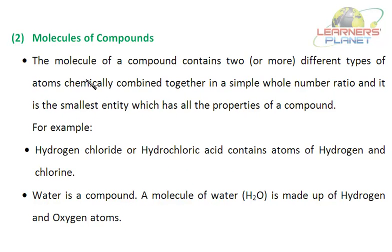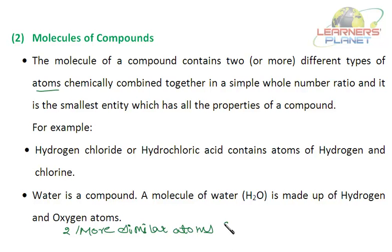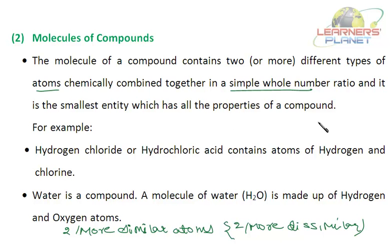There are also molecules of compounds. The molecule of a compound contains two or more different types of atoms, whereas a molecule of an element has two or more similar atoms. In a compound, the atoms combine in a simple whole-number ratio by mass — consistent with the law of constant proportions. A molecule of a compound is the smallest entity which has all the properties of that compound.